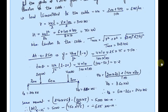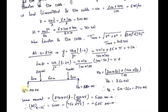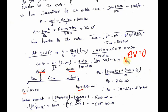Now we find the reactions Va and Vb using equilibrium equations. Applying summation of vertical forces equal to zero, total upward force equals total downward force: Va plus Vb equals 200 plus 400, which is 600. This is equation number 1.